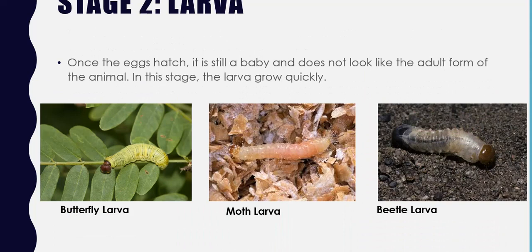Stage two is the larva stage, and that's when they all look like little worms, basically. Once the eggs hatch, it's still a baby and it does not look like the adult form of the insect or animal. In this stage the larva grows quickly. What's similar is that they all kind of look like little worms, which wiggle around. We have butterfly larva in the first picture — basically it becomes a caterpillar and then it grows into the butterfly. Here we have moth larva, which looks the exact same as the butterfly larva. And then the last picture is actually a beetle larva. You can see that all of these creatures do not look anything like their adult form.